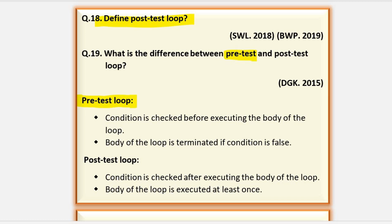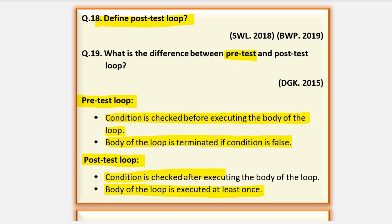Define posttest loop and pretest loop. A pretest loop is one where the condition is checked before execution of the body of the loop — for example, while loop, where the condition is tested first and then the body executes; the body terminates if the condition is false. In a posttest loop, as in do-while loop, the body is executed at least once first — whether the condition is true or false — because the condition is not tested first. After at least one execution, the condition is tested: if true, the next iteration runs; otherwise the loop terminates. The condition is checked after the execution of the body.